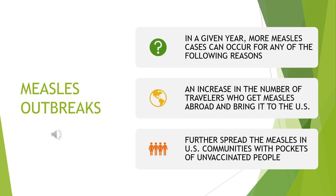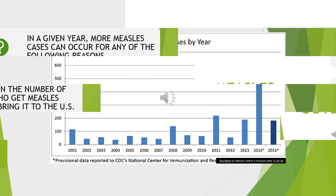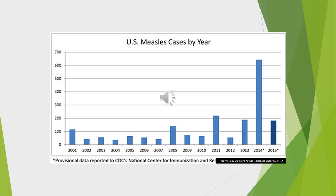In a given year, more measles cases can occur for any of the following reasons: an increase in the number of travelers who get measles abroad and bring it into the U.S., or further spread of measles in U.S. communities with pockets of unvaccinated people.